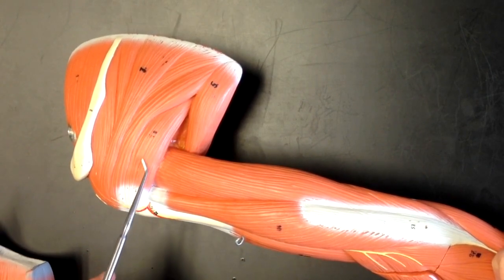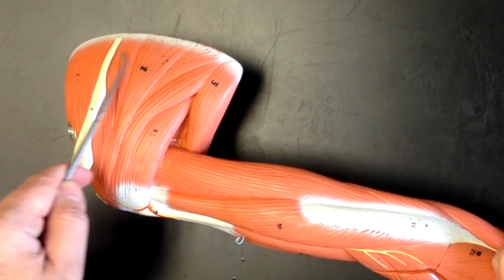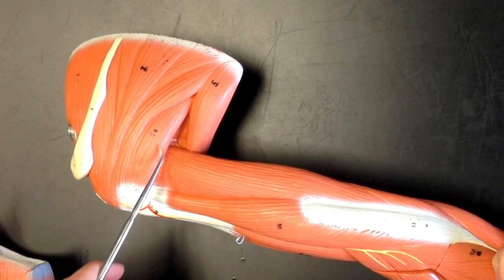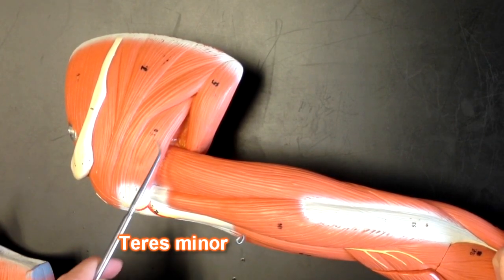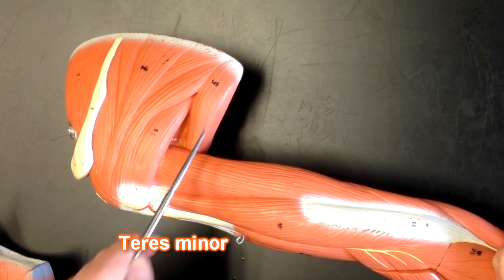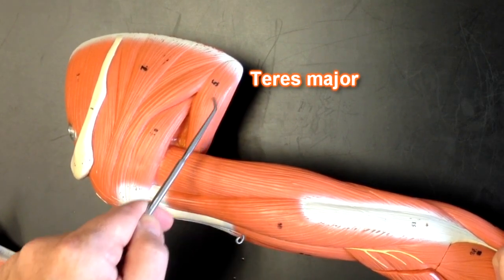This muscle right here is separate from the infraspinatus although it functions the same way as the infraspinatus. This right here is the teres minor. The teres major would be this muscle right here.